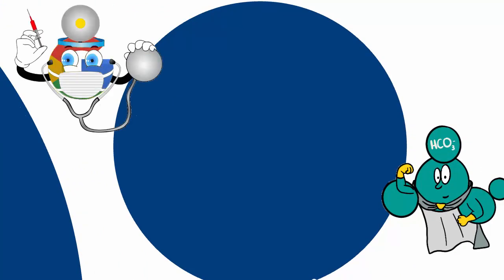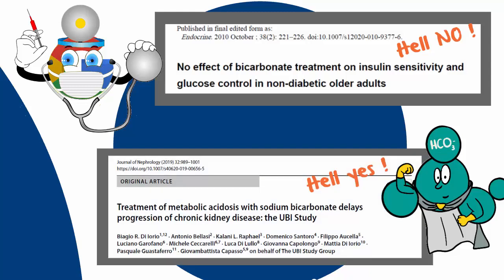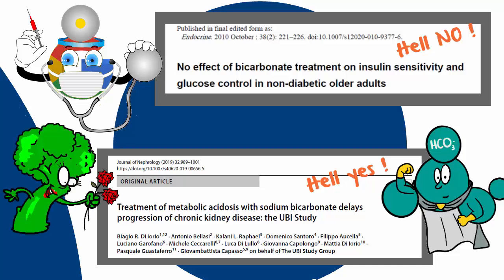Dr. Google suggests this as a go-to strategy, but the short answer is probably not. There is no credible scientific evidence to suggest that alkalinizing in and of itself will improve insulin sensitivity. Although there is evidence to suggest it can give a shot in the arm to a failing kidney. Interestingly enough, the same effects are seen with increased consumption of fruits and vegetables.